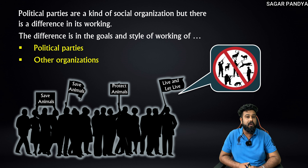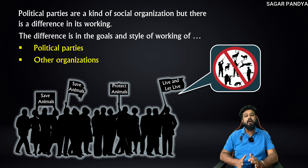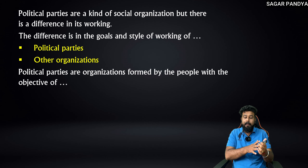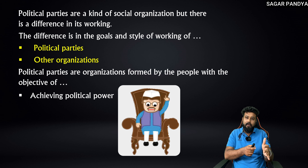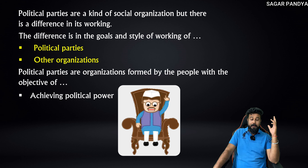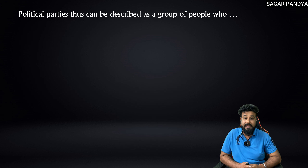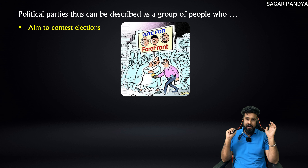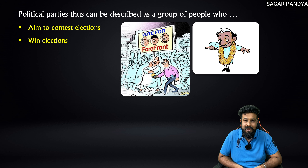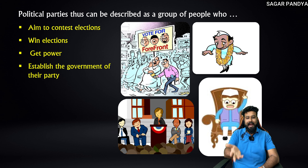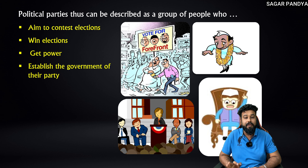Political parties are a kind of social organization, but there is a difference in their working compared to other social organizations like NGOs — non-governmental organizations. Political parties are organizations formed by people who aim to contest elections. After winning elections, they get power, and at the end of the day, they establish the government of their party.